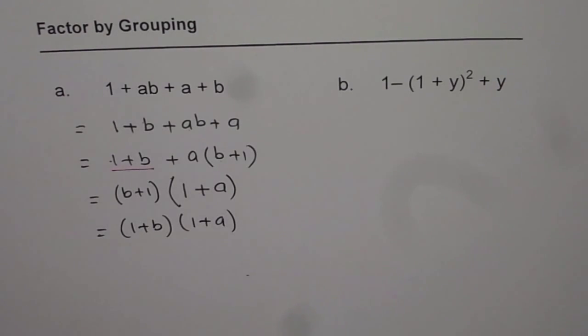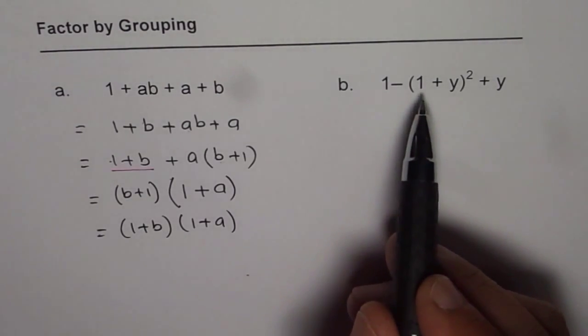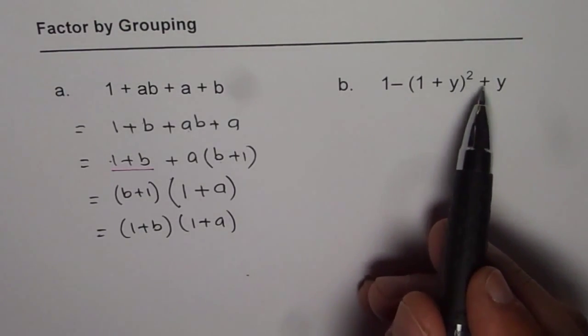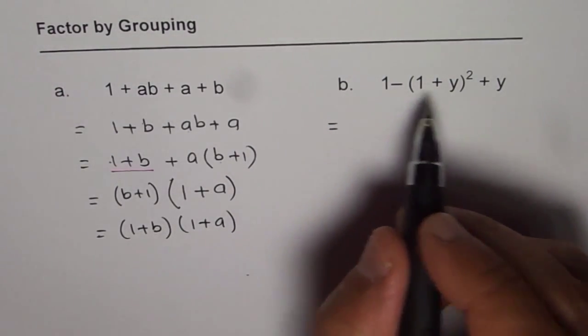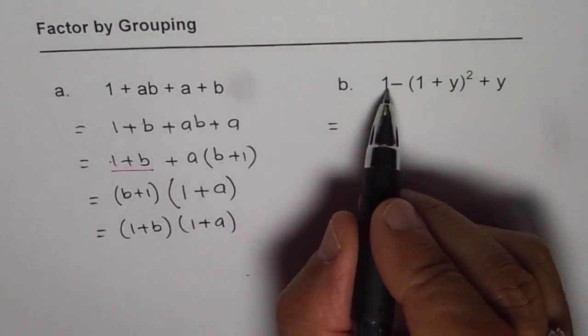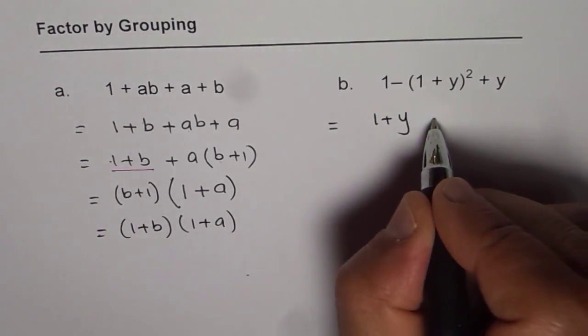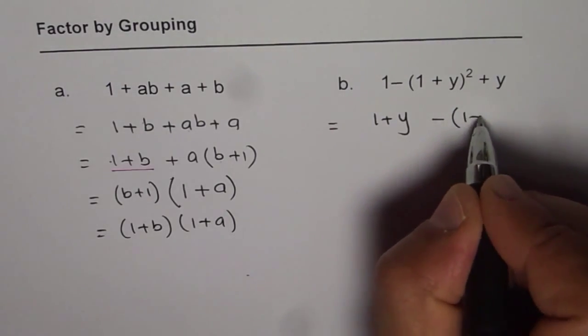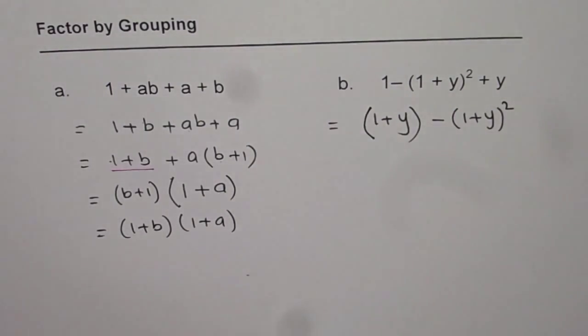Now let us try to factor part b, which is 1 - (1 + y)² + y. So the first step is rearrange. Let us rearrange. We get 1 + y. And the second term we will treat as minus (1 + y)². So we are treating this as one term, right?